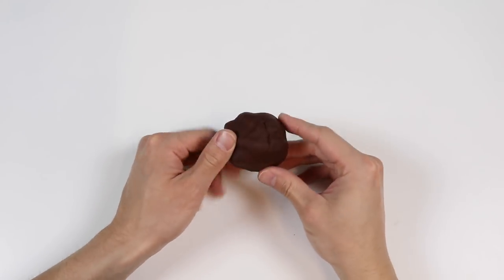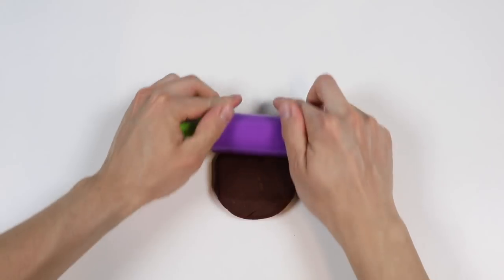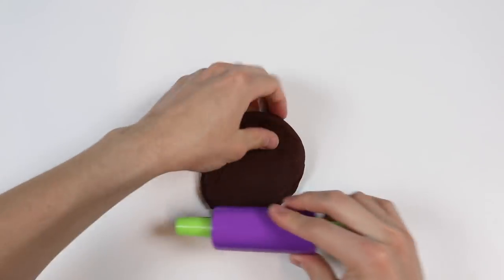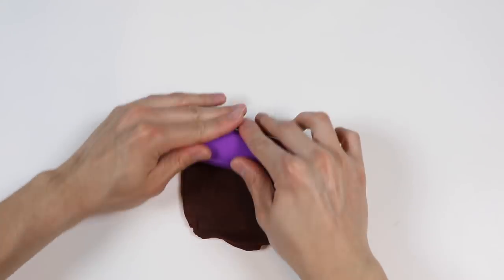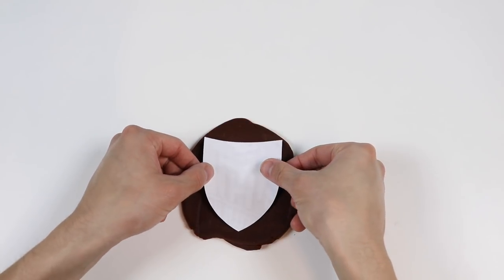To begin, we're going to need some brown Play-Doh. Roll it out. Now let's cut out the Monster High logo shape.